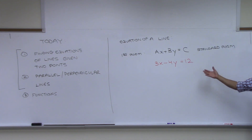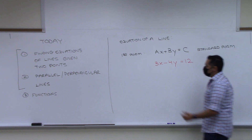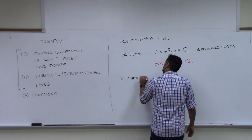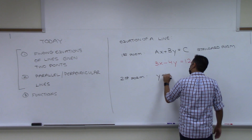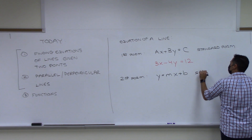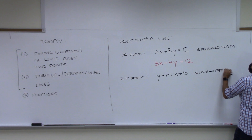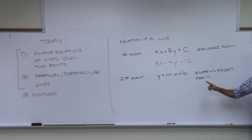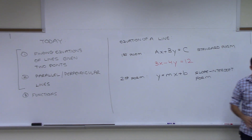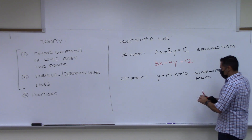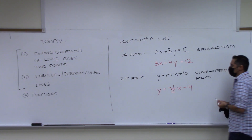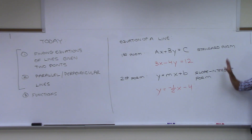If I asked you to graph standard form right now, you could use one of the two methods. The second form is y equals mx plus b, called slope-intercept form. We already looked at that last class — it's the form we like to work with when using the slope-intercept method to sketch a line. An example is y equals negative one-half x minus 4. Those are your two standard forms of a line equation.